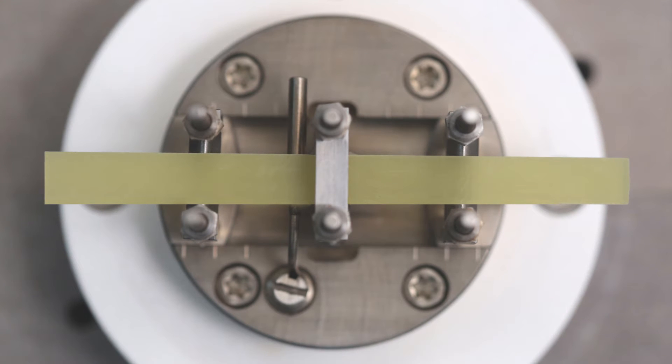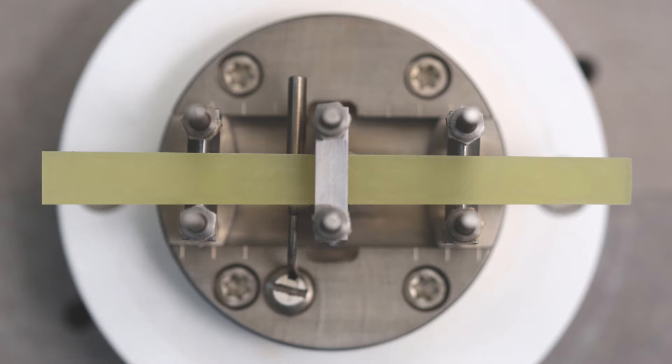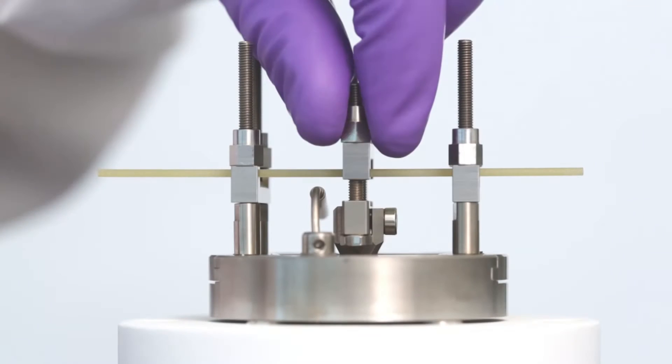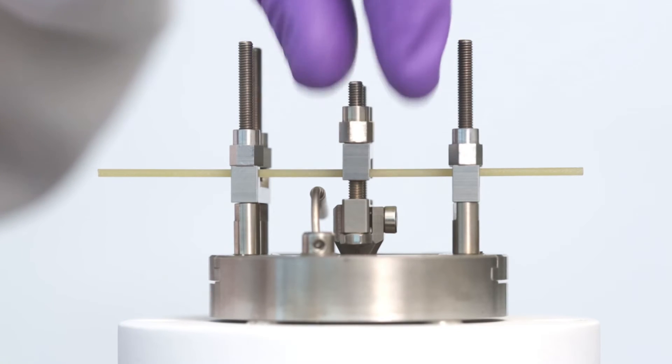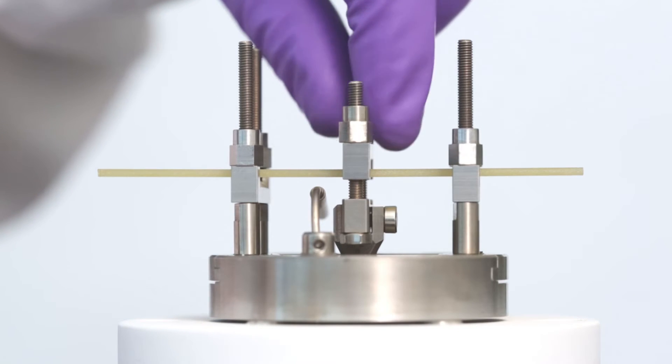Now, we need to check that the sample is positioned straight in the clamps and the sides are not in contact with the clamps. Once we are happy with the position of the sample, we can finger tighten the two extended nuts on the central clamp.